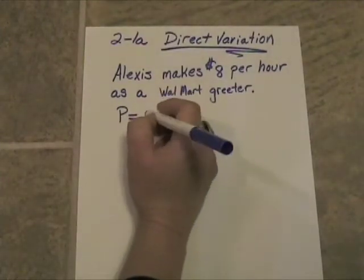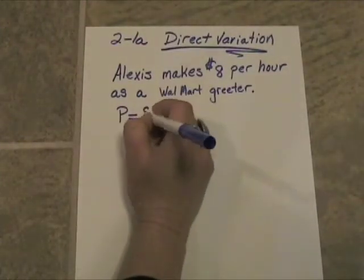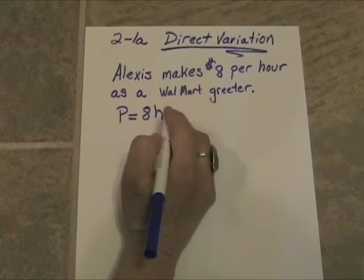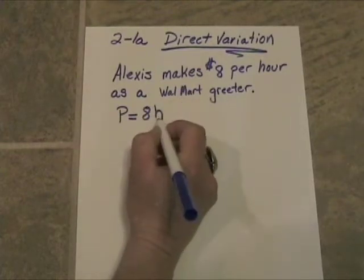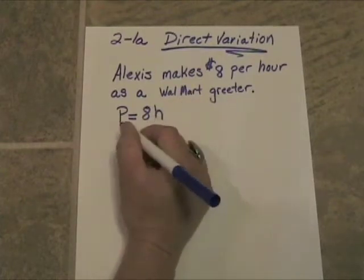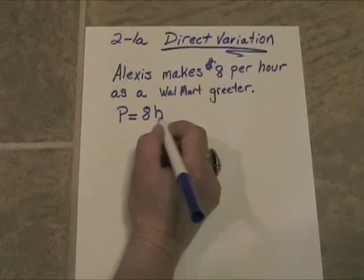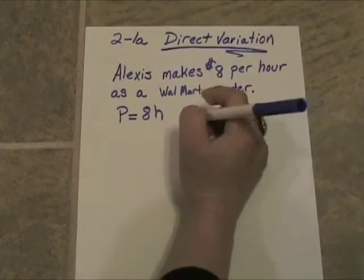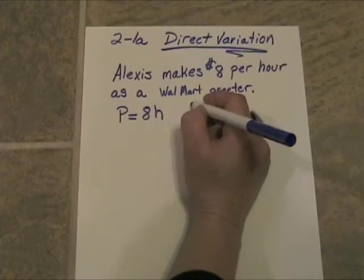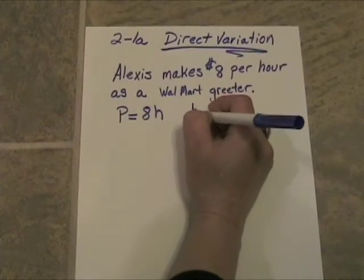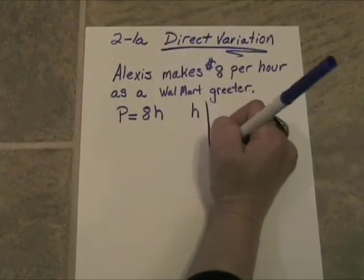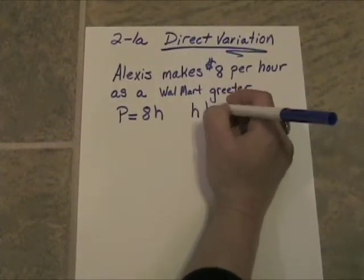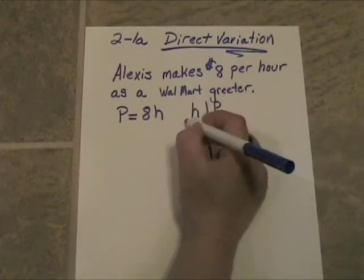P is equal to 8 times H. The independent variable here is H. Her pay depends upon how many hours she works. So let's set up a little t-chart here. We'll put the independent variable first and the dependent variable, which is pay, second.